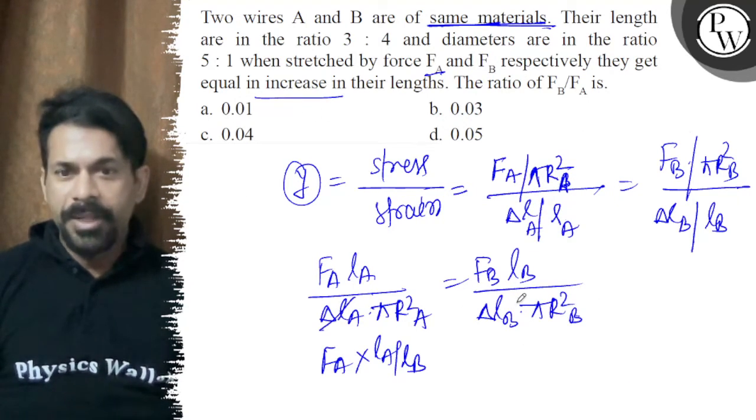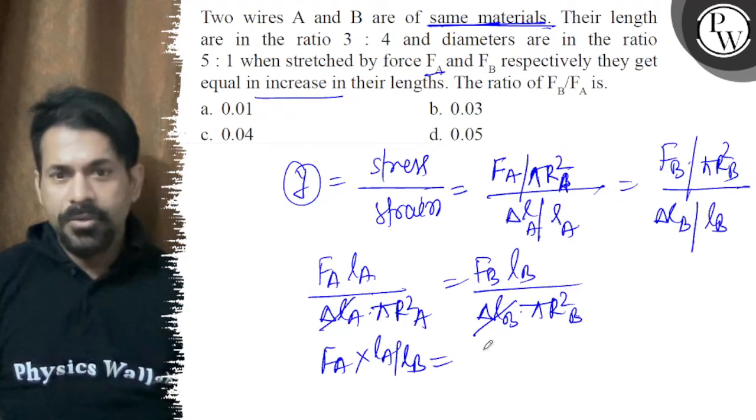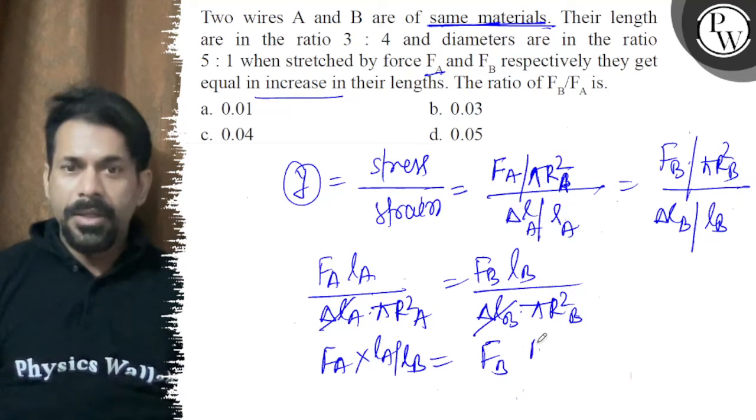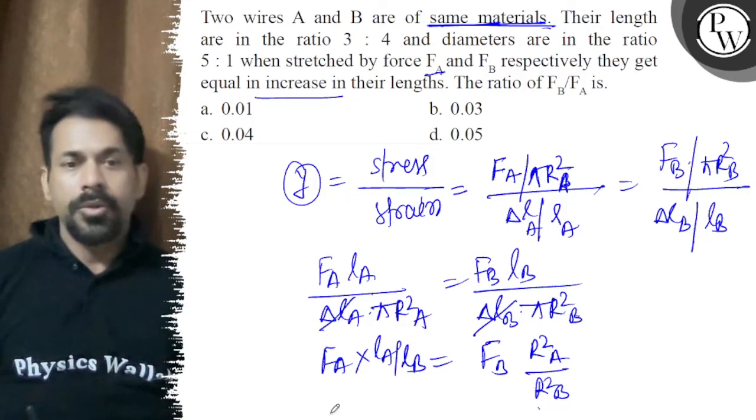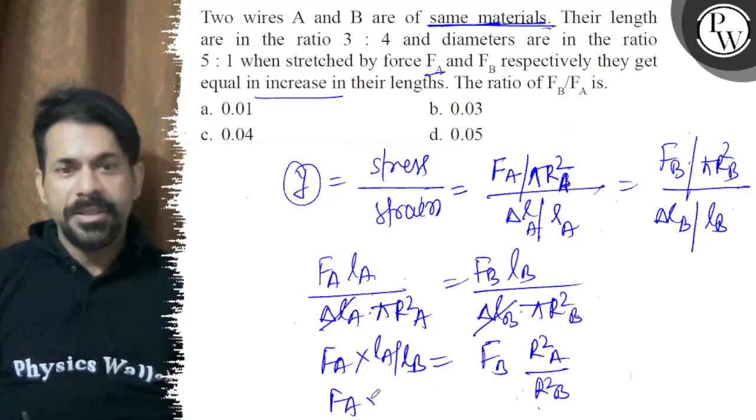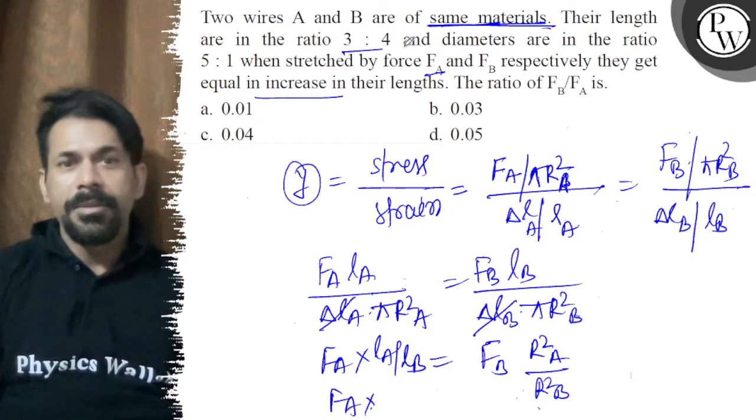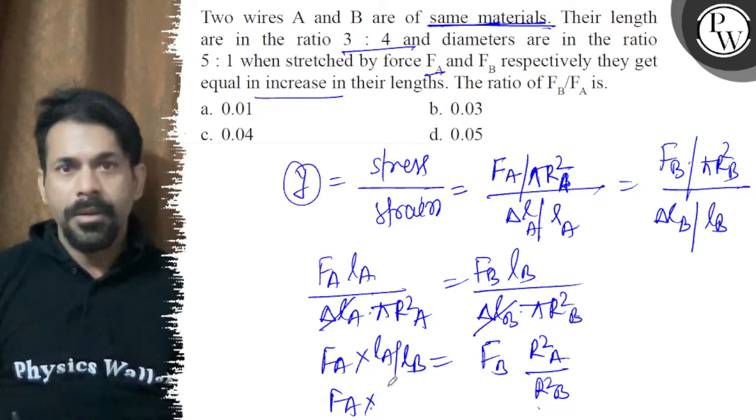So FA is equal to FB into R square of A divided by R square of B.